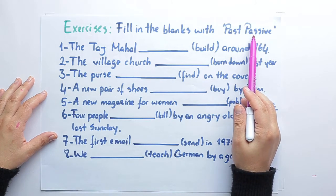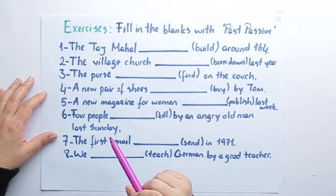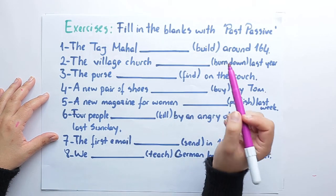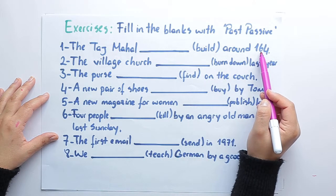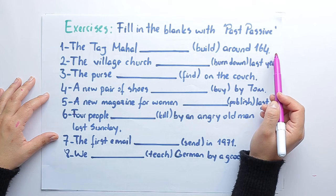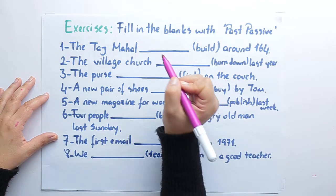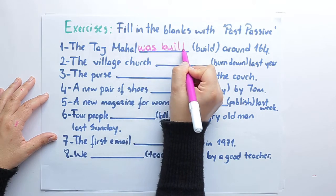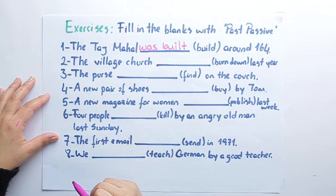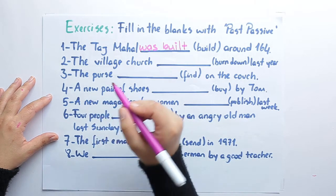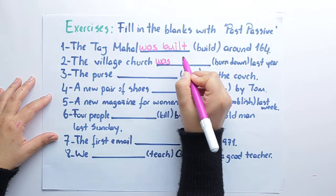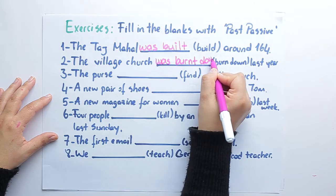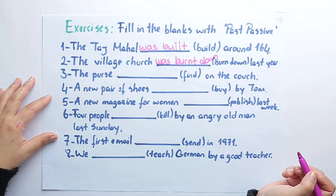Now time to fill in the blanks with past passive. The Taj Mahal built in 1648, was built. The village church was burnt down last year.